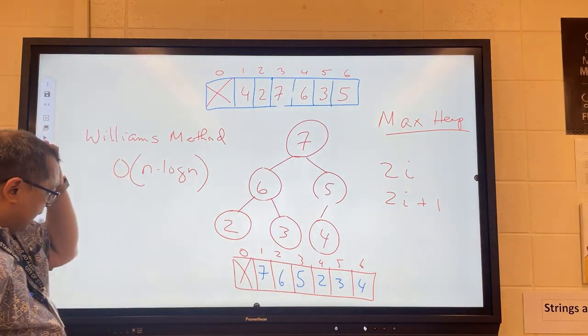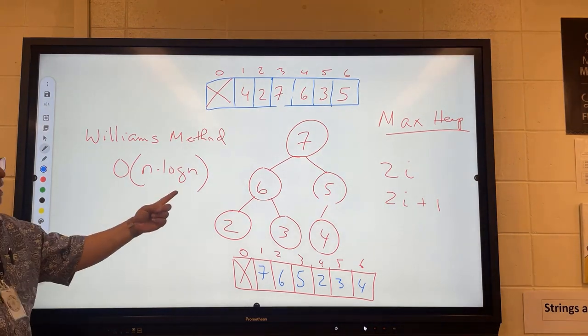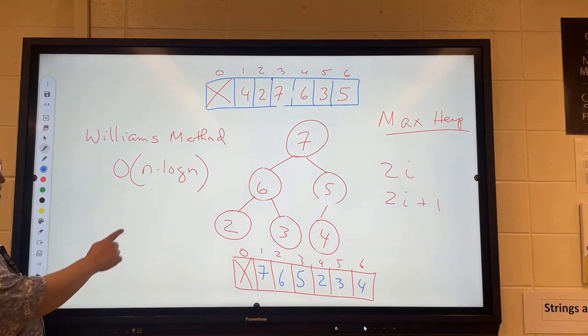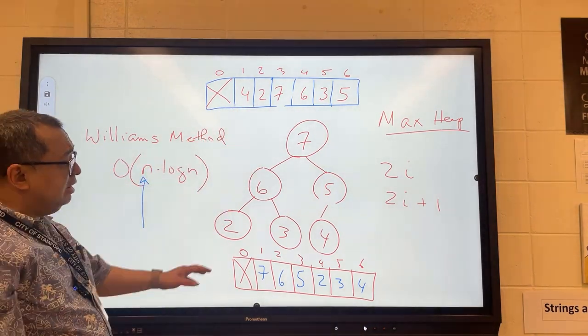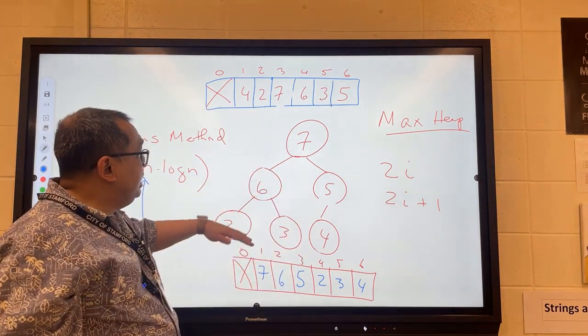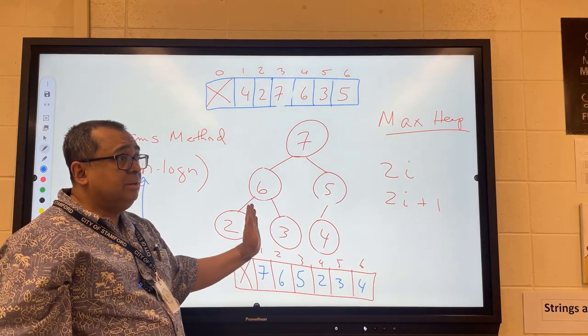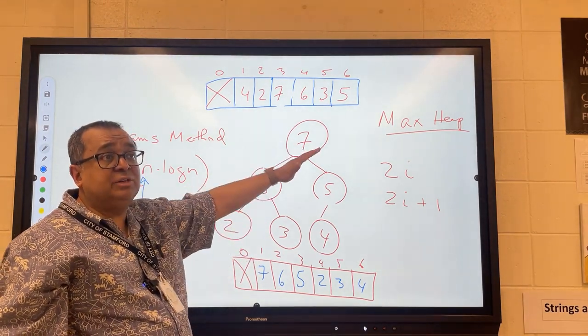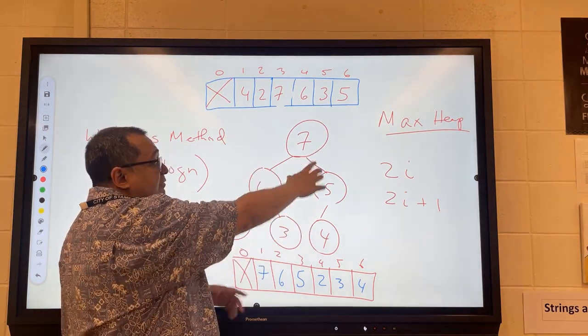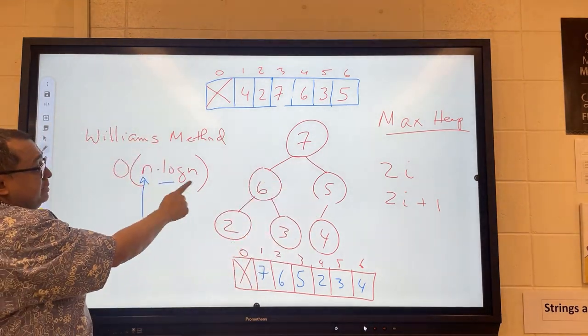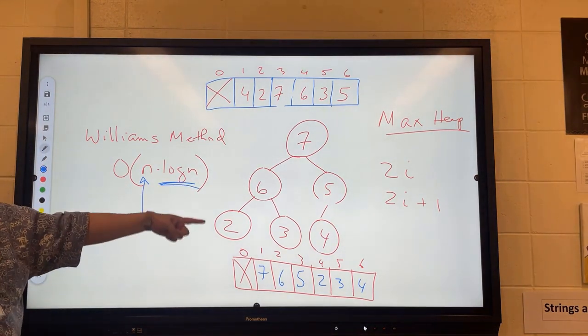Now we're going to look at, so this was the Williams method and the reason why it's n log n is we have to process every node. We have to process every number and the number of flips that we have to do is basically dependent on the height of the tree. So any number that I insert, the maximum number of times it has to travel to the top, how many comparisons and swaps I have to do is based on the height of the tree and that's basically log n. So that's where the n log n comes from for the Williams method.